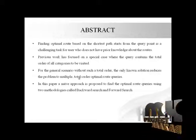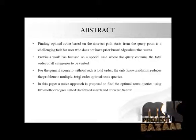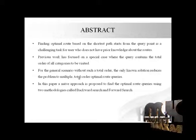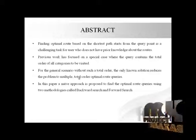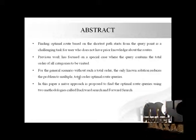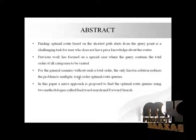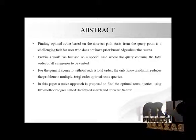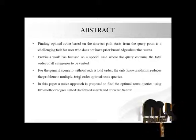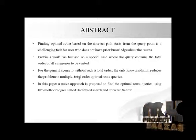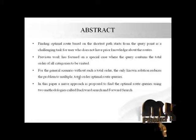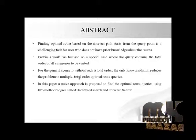Previous work has focused on special cases where the query contains the total order of all categories to be visited. In this paper, we propose an approach to find the optimal routes using two methodologies called the backward search algorithm and the forward search algorithm. Using these algorithms, we extract the optimal route that provides a satisfactory route to users who don't have knowledge about the route.